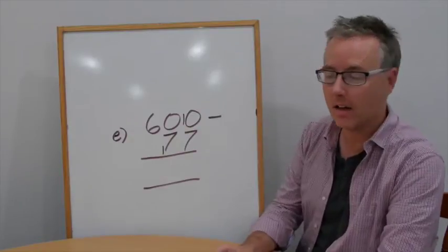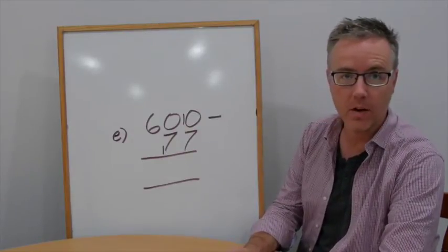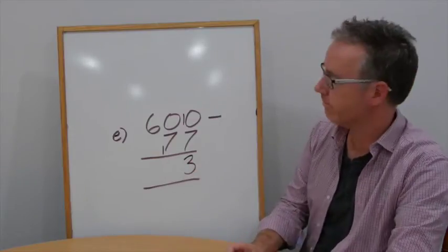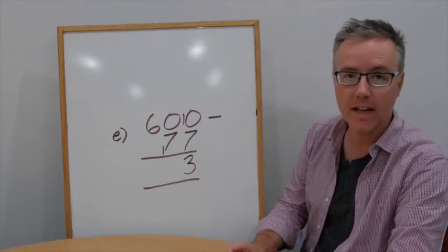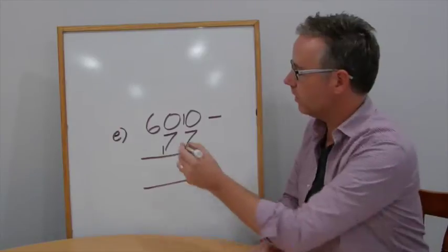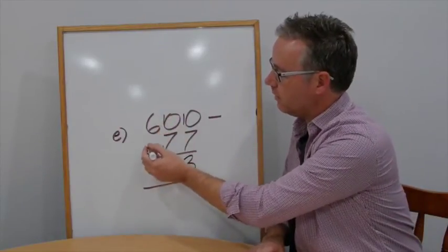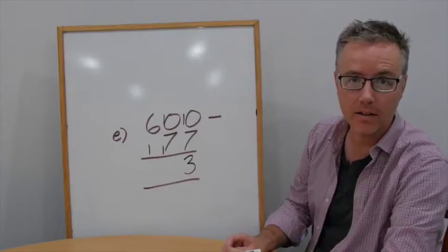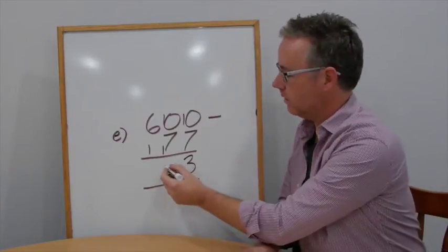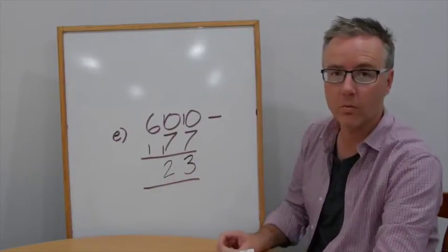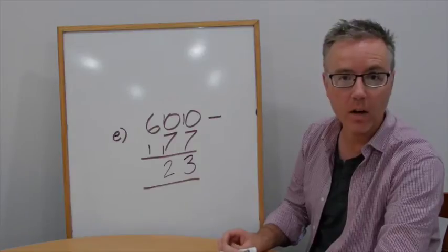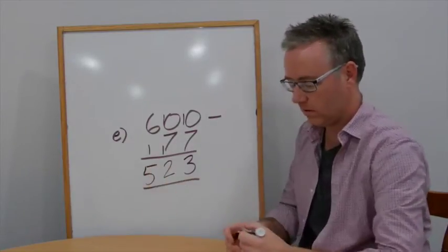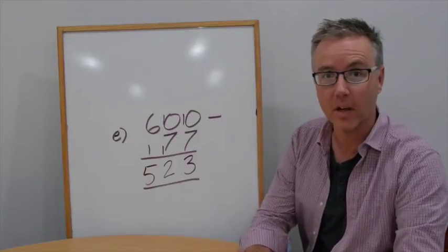10 take away 8. 10 take away 8. 10 take away 8, can't do. Add 10, add 10. 10 take away 7 is 3. 2. 6 take away 1 is 5. How are you going so far? Let's keep going.